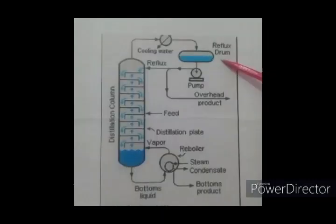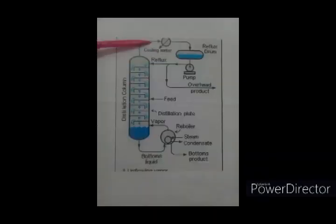Next, the reflux drum or accumulator serves as a distribution point for reflux and distillate. The condensed liquid leaves the reflux drum under level control. Drum level control is critical to ensure that the proper amount of reflux will return to the distillation tower.